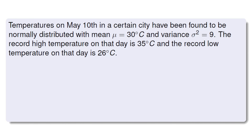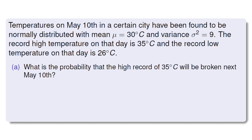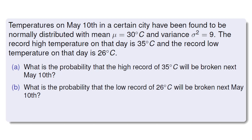So let's firstly consider this example. Temperatures on May 10th in a certain city have been found to be normally distributed with mean mu equals 30 degrees Celsius, and the variance sigma squared equals 9. We also know that the record high temperature on that day is 35 degrees, and the record low temperature is 26 degrees. What is the probability that the high record of 35 degrees will be broken next May 10th? What is the probability that the low record of 26 degrees will be broken next May 10th?